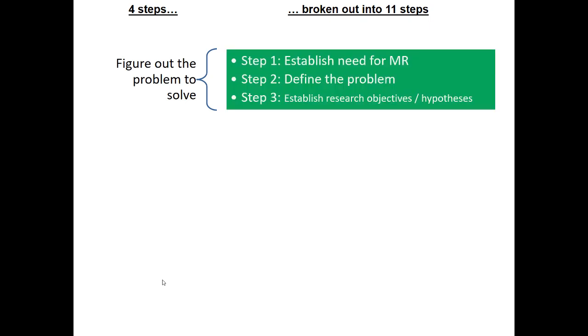Let's break this out further into 11 steps. This 11-step process does a pretty nice job of breaking out all the key sequence of events for a successful marketing research project. First, we need to establish that we need to conduct marketing research — it's going to cost time, money, and effort. Then we have to define the problem, and given a correctly defined problem, we can figure out the research objectives. As we'll find out, these three steps are perhaps the most challenging of the entire marketing research process.